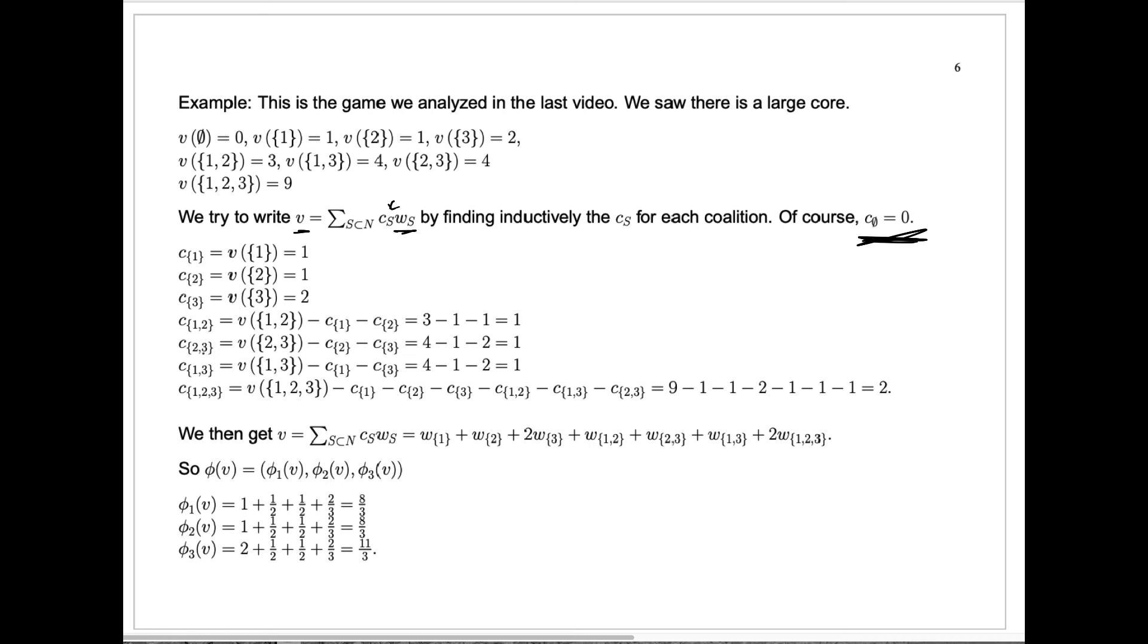The constant c for the set two, three is similarly the value for that set two, three, minus the constant we've already computed for two and the constant we've already computed for three. And we get four minus one minus two, which is one. And a similar computation for c of the set one, three.